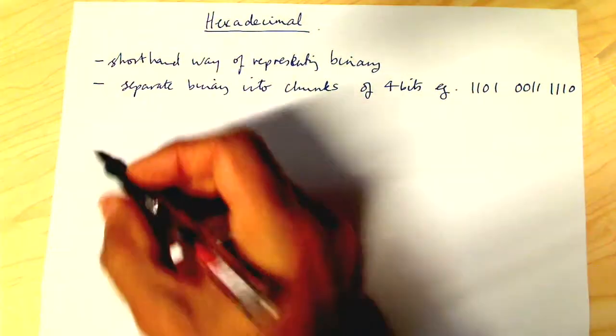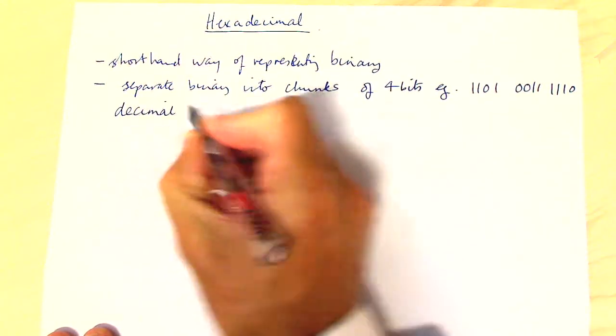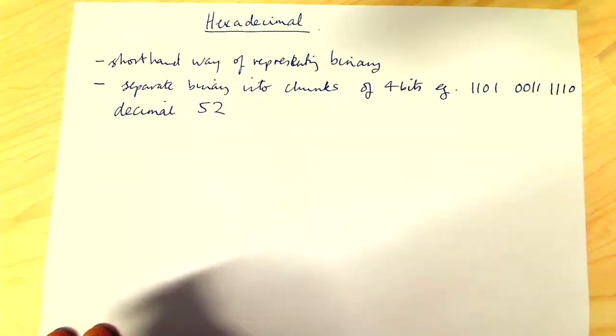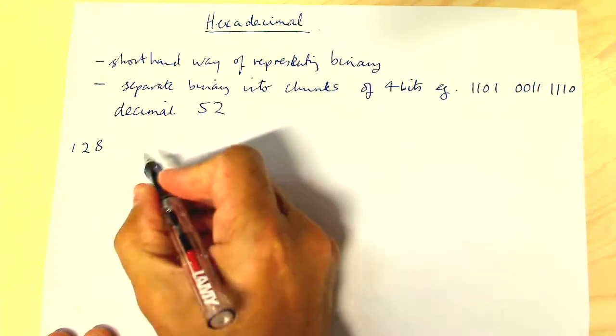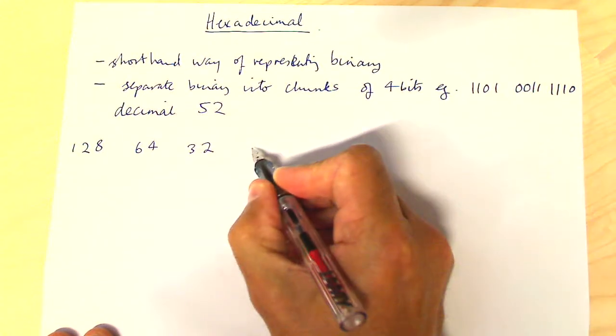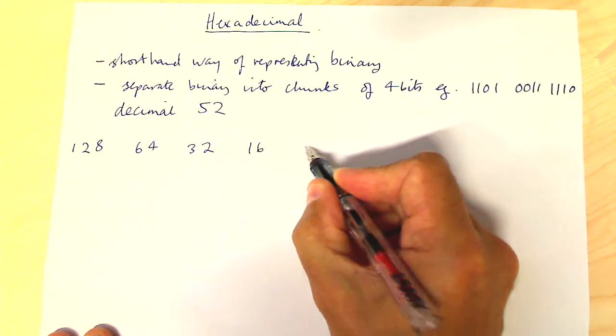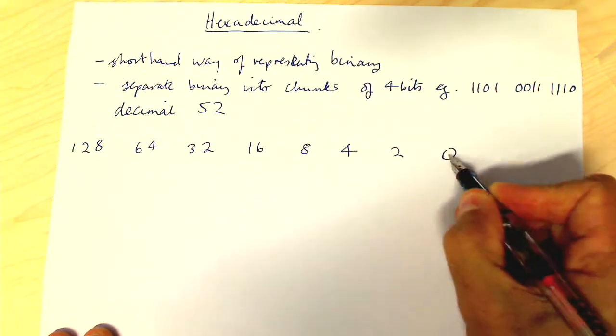So I'm going to look at the decimal number 52 and we're going to express that. So decimal is 52. How do we work this out? Well, we do our binary number line: 128, 64, 32, 16, 8, 4, 2 and units.